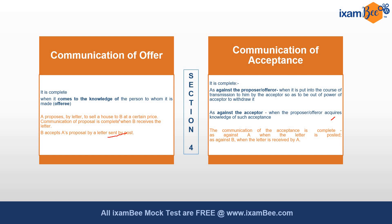Looking at the communication of acceptance, it is completed in two phases. First, as against the proposer or offeror, it is complete when the acceptance is put in the course of transmission by the acceptor so that it is out of the power of the acceptor to withdraw it. Second, against the acceptor, it is complete when the proposer acquires knowledge of the acceptance. So in the A and B example, the communication of acceptance is complete against A when the letter is posted, and against B when the letter is received by A.